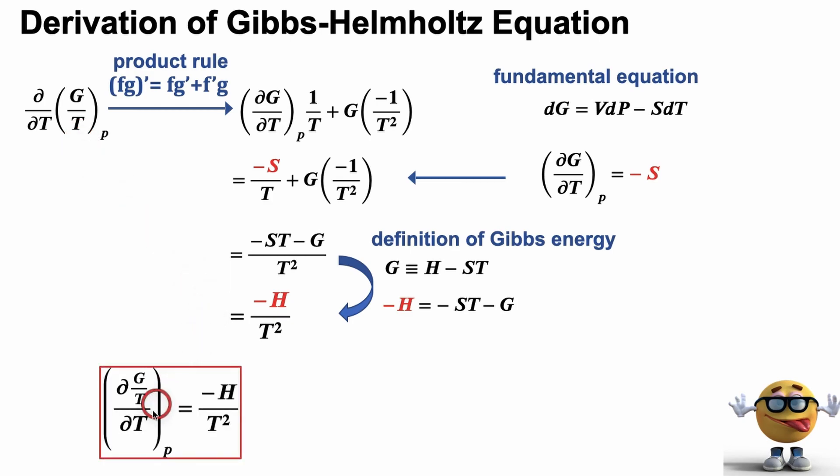So now we can equate these two together to get the differential form of the Gibbs-Helmholtz equation. Now this isn't really a useful form for us because this gives us the change in G over T. And for a process, we don't care about G. We don't care about the Gibbs energy. We care about the change in Gibbs energy. So imagine we do this whole thing using delta G.